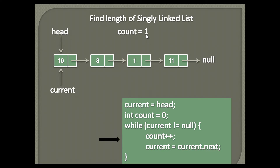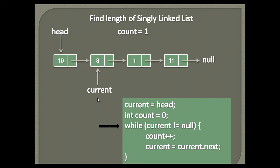Moving to the next step. Currently, the current node points to head and current's next points to the second node. The second statement assigns current's next node to current — that is, it traverses the current node to the second node. Now it checks the while loop condition again. The current node points to the second node, which is not null. Therefore it again executes the statements in the while loop. Count gets incremented by one and becomes two, because current is not null, and signifies the list has two nodes.